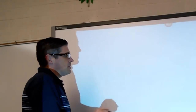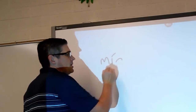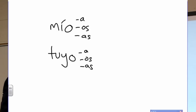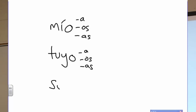So we've got mío, and you probably already noticed you can switch to mía, míos, mías. Next one, if you want to say something is yours: tuyo. And of course tuya, tuyos, tuyas. No es mío — es tuyo. Now if you want to say his or hers: suyo, suya, suyos, suyas.